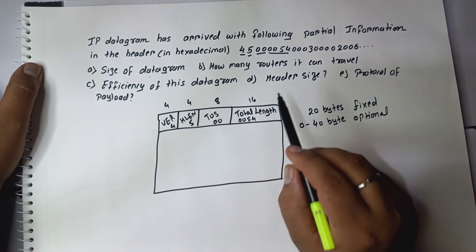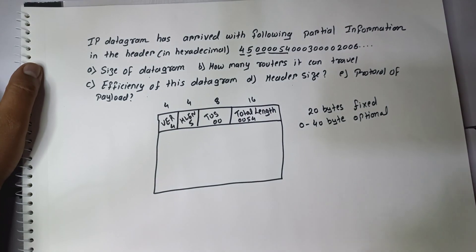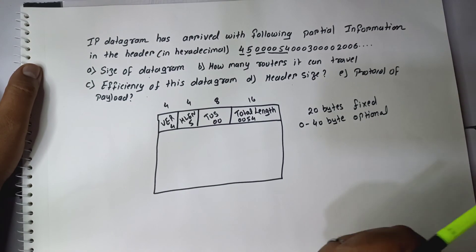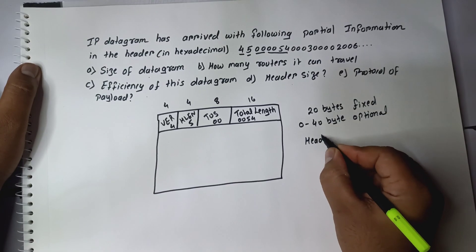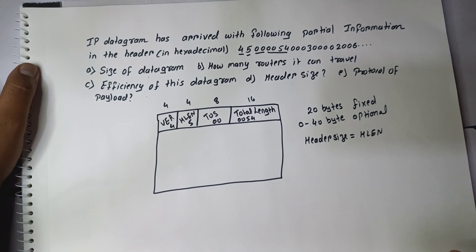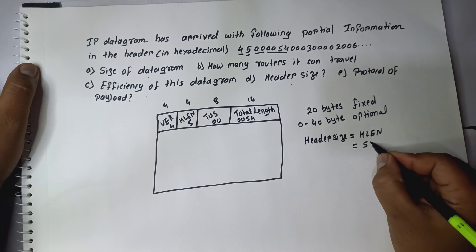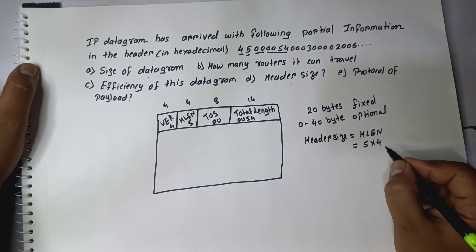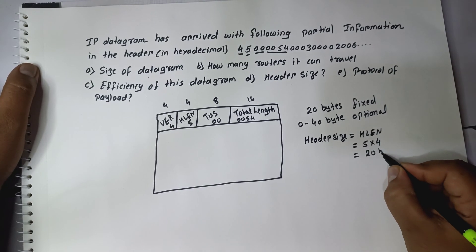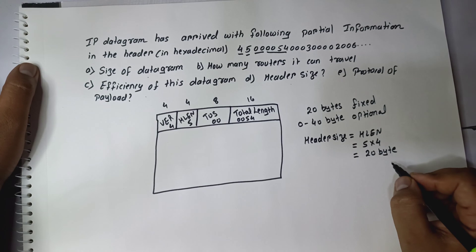They have asked for the size of the datagram header and efficiency. This can be solved with the first row. The header size is obtained from the H-length field, which stands for header length. It is a 4-bit field represented in 4-byte words, meaning the value should be multiplied by 4. The header length value is 5, so 5 × 4 = 20 bytes. That is the size of the header.